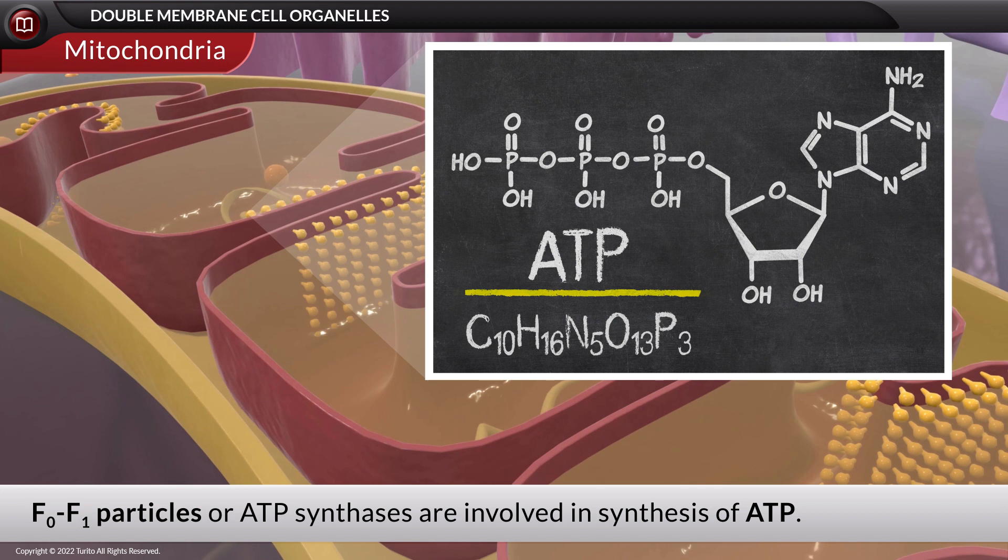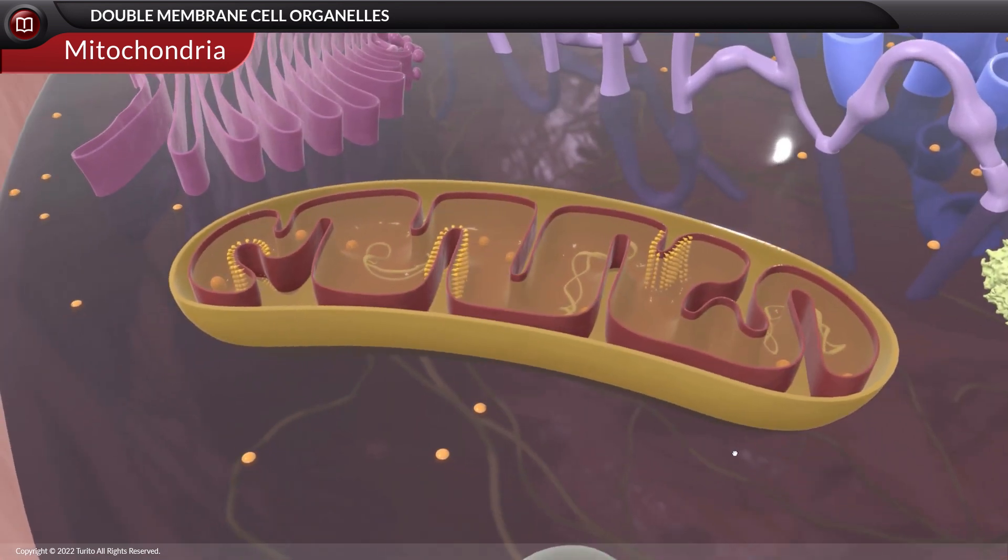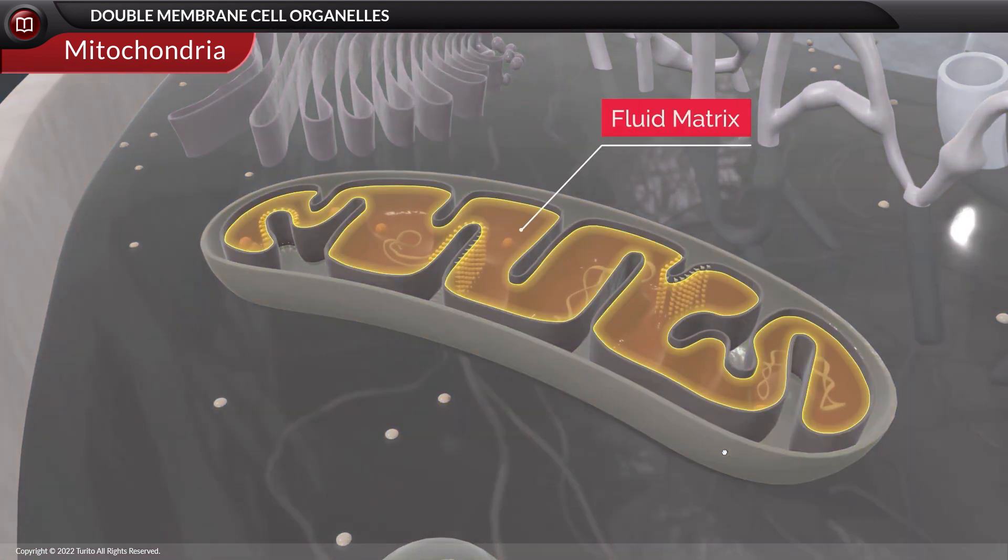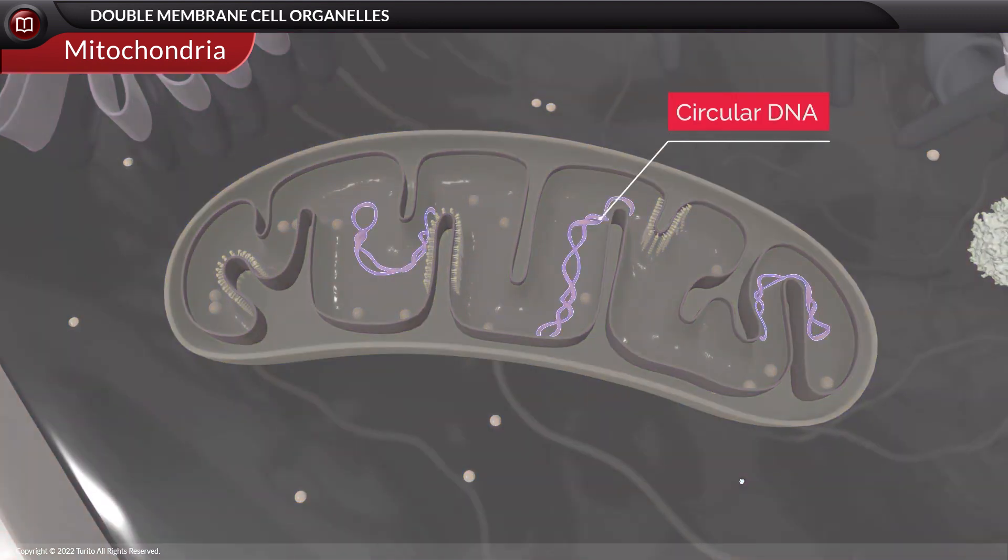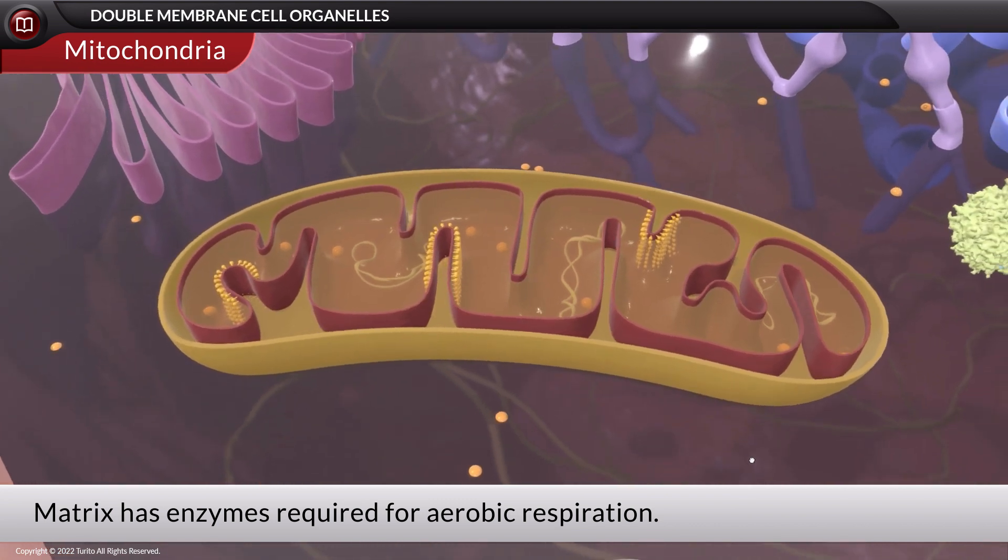The cristae are thrown into folds to increase the surface area for energy production. The mitochondrial membranes enclose a fluid matrix that accommodates the circular DNA, 70S ribosomes, and the enzymes required for the process of aerobic respiration.